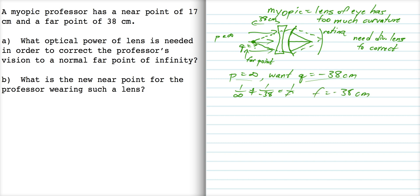Now, we want the optical power, so the optical power is 1 over the focal length in meters, so 1 over negative 0.38, which is negative 2.6 diopters. So there's our answer for part A.